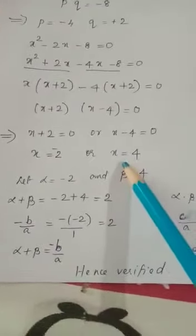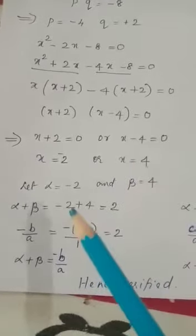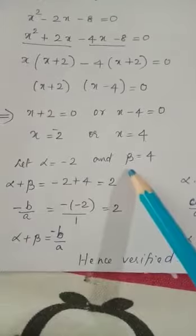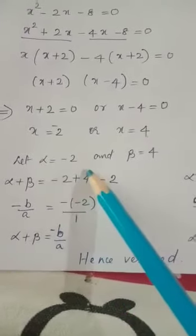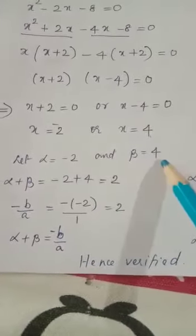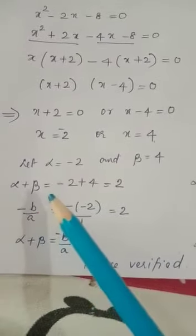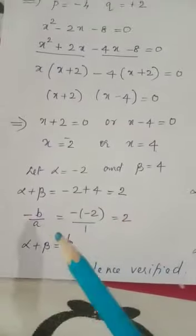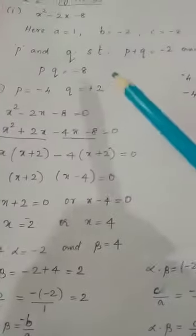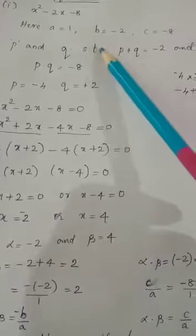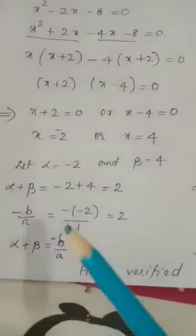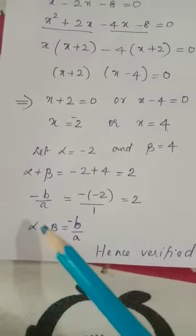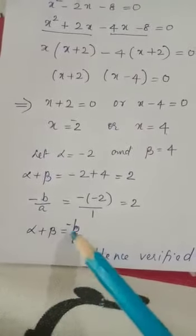These are the two zeros. We take alpha as minus 2 and beta as 4. So alpha plus beta equals minus 2 plus 4 equals 2. And minus b by a equals minus (minus 2) divided by 1 equals 2. So alpha plus beta is equal to minus b by a.